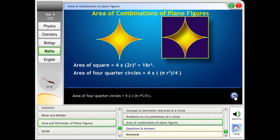Area of 4 quarter circles equals 4 into Pi R square by 4. Area of figure equals 16R square minus 4 into Pi R square by 4.